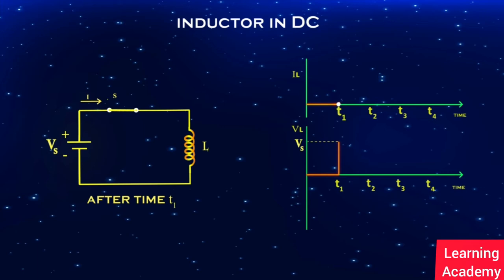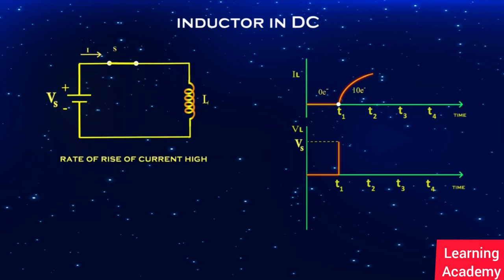Between time t1 and t2, let us assume that 10 number of electrons have started to flow through the circuit after the switch is closed at t1 till t2. Before time t1, there is zero electrons flowing through the circuit, and for the time span t1 to t2, there is a flow of 10 electrons. This clearly indicates that the rate of rise of current is high. That is, the rate of change in current equals 10.